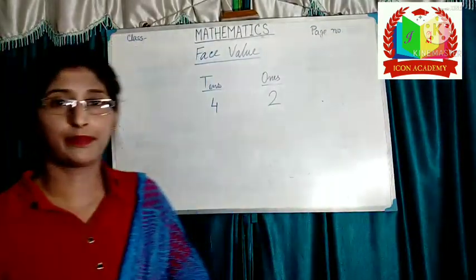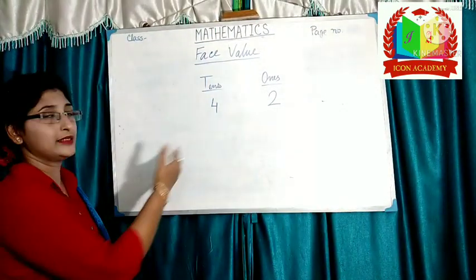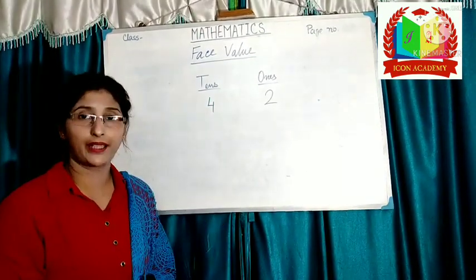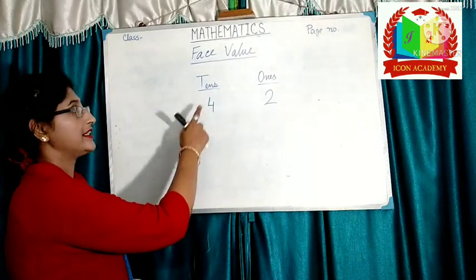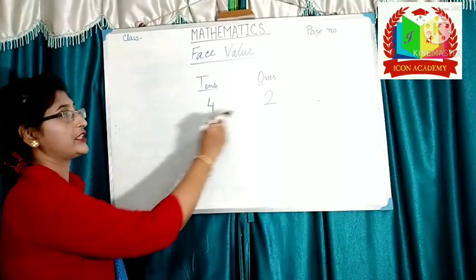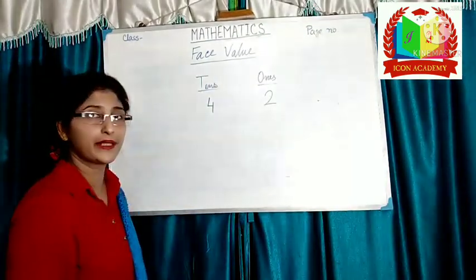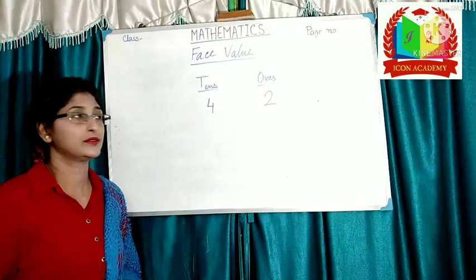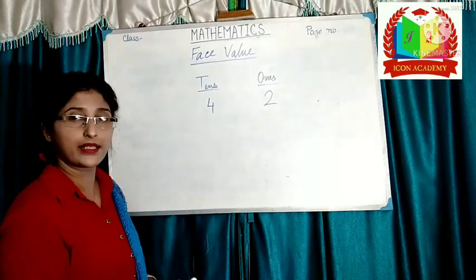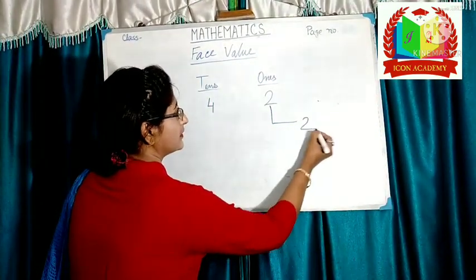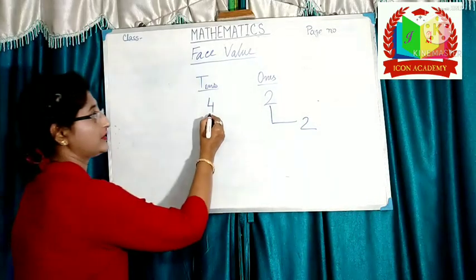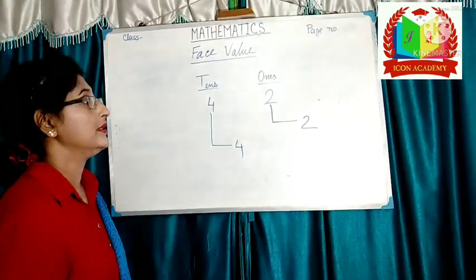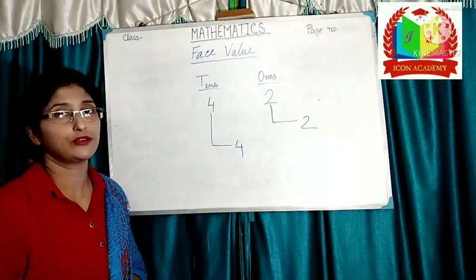Let's take an example. Here the number is 42. Starting from the right, the first digit will be at 1's place, then 10's place. Number 42: 2 is in 1's place and 4 is in 10's place. So, the phase value of 2 is 2, and phase value of 4 is 4. As you know, phase value never changes according to the place.